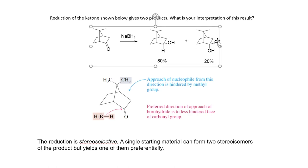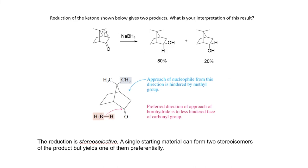The next question is about reduction with sodium borohydride, and you get a mixture of 80 to 20. This is consistent with what we observed before: when you have two methyl groups on the norbornanone, the top face is hindered by the presence of the methyl group, and the preferred direction of attack is from the bottom face. If you do not have the methyl group, attack from the top face is preferred. This reaction is stereoselective — a single starting material forms two stereoisomers of the product, but forms one preferentially.